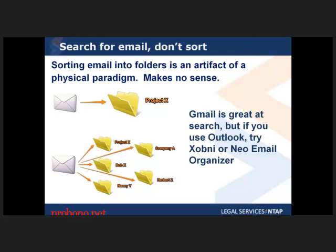If you can't use Gmail and are stuck with Outlook, try two add-ons. Xobni — inbox spelled backwards — indexes your email PST file for really quick search and lets you quickly pull up emails from one person. I usually remember who sent something rather than what project it was related to. Neo Email Organizer by Kalo is an application that sits on top of Outlook and is great for organizing emails by client, matter type, and other criteria. I used it heavily when I was on Outlook and had to parse emails in many different ways.